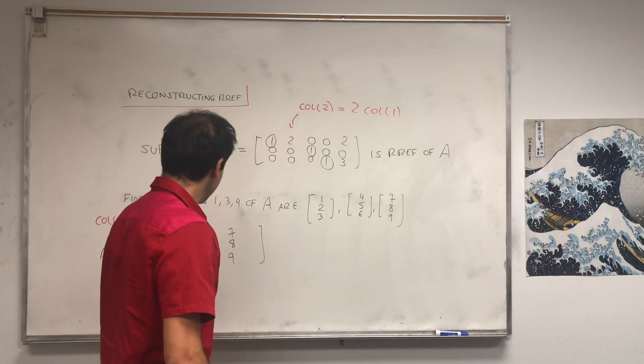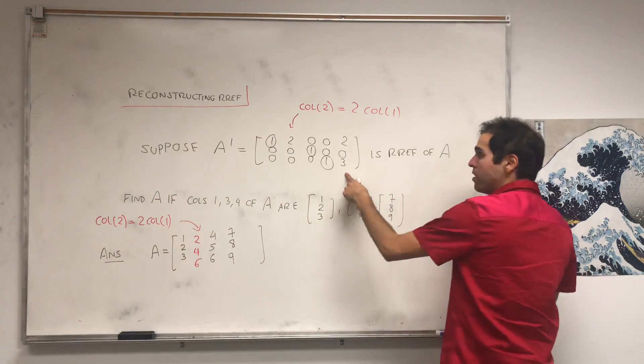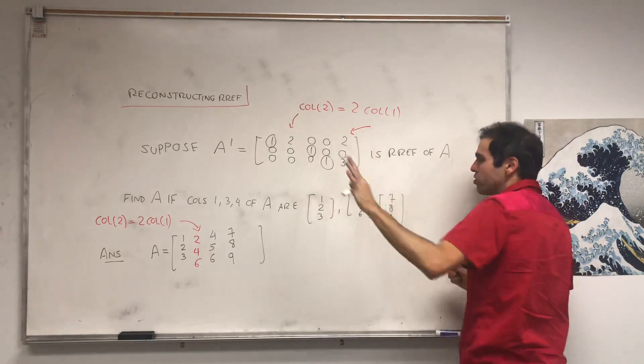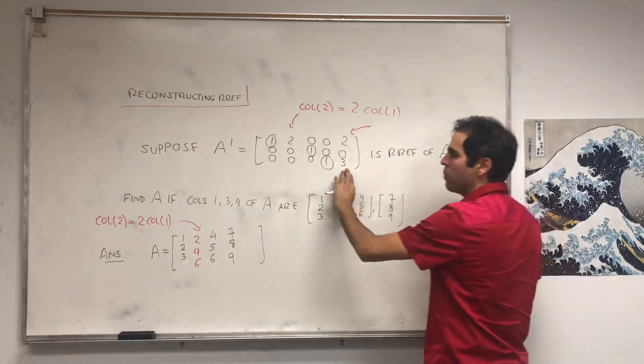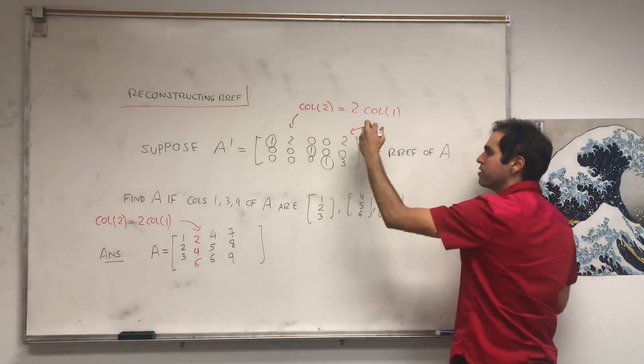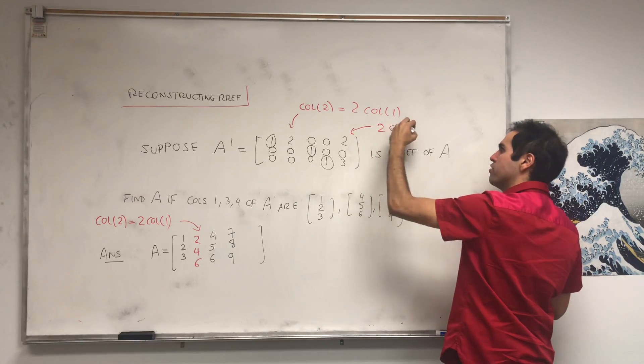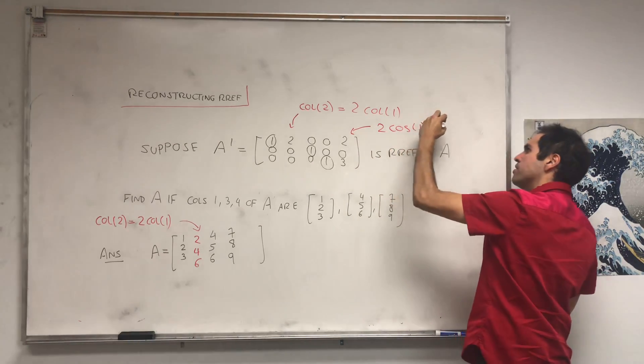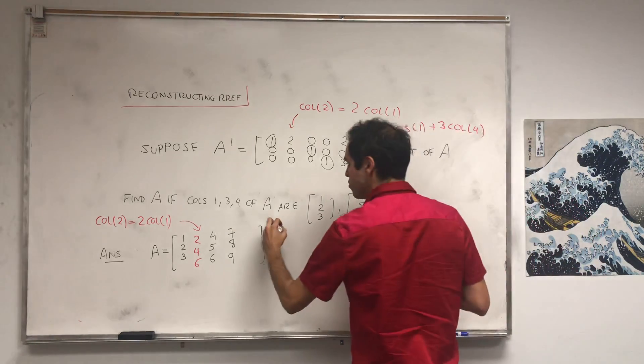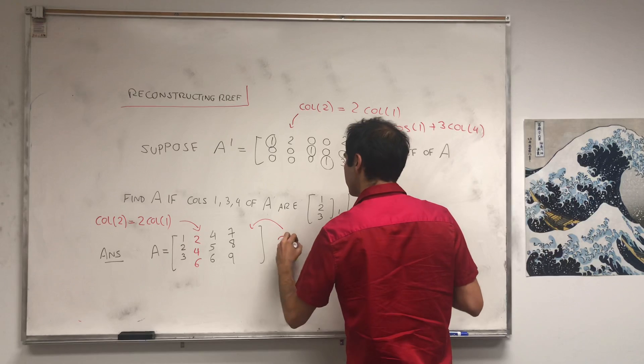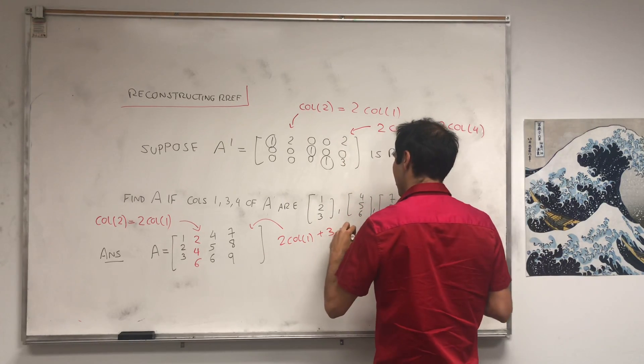Okay, what about here? Notice, and this is always true, the non-pivot columns are always linear combos of the pivot columns. So in this case, [2, 0, 3] is two times the first column plus three times the fourth column. It's still true here. We get two times the first column plus three times the fourth column.